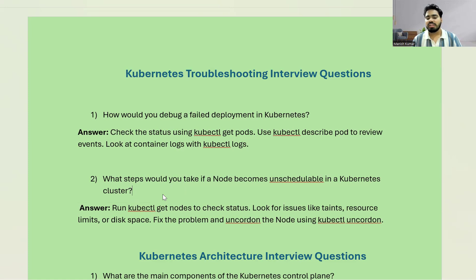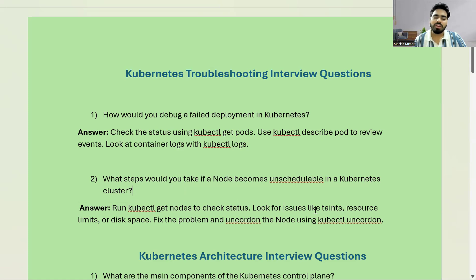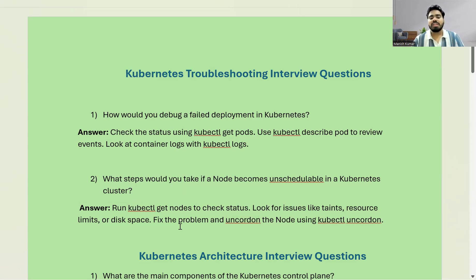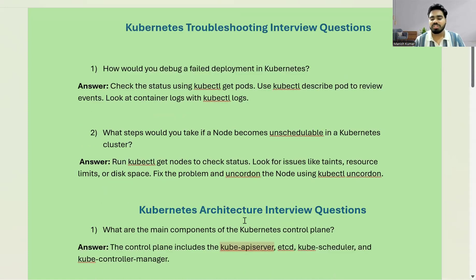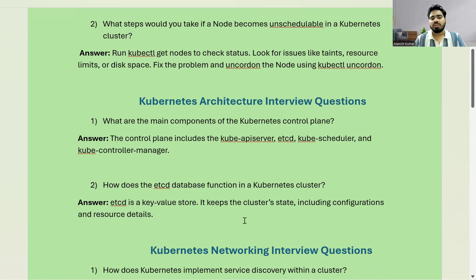You can look for taints, you can look for resource limits — for example, if your pod requires 1 GB of memory and your node only has 700 MB remaining, it will not accept that pod. You can check for resource limits and disk space as well. You can also fix the problem and uncordon the node using the kubectl uncordon command, which will allow you to schedule new pods on that node.